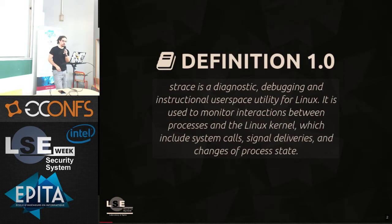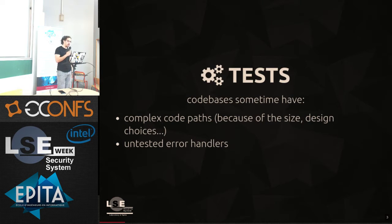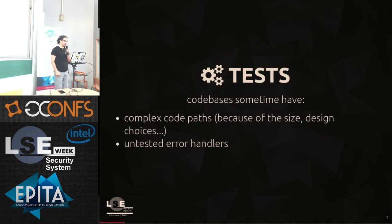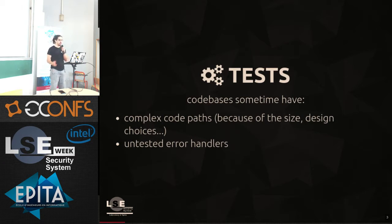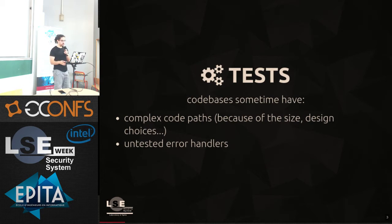Let's start by a quick observation on the actual state of testing in various projects. We already know that code bases sometimes have complex code paths because of their size or design choices. Complex code paths lead to untested error handlers, if they exist. The reason is that complex setup is often required to get into the failing condition. So, who does actually write tests for their project, either closed or open source? And do you even trust your tests?